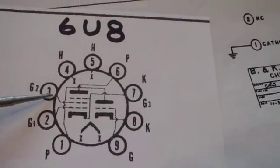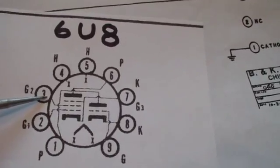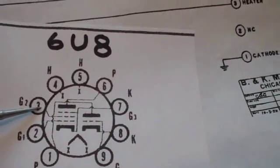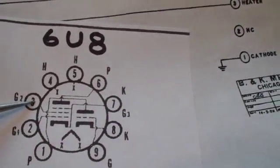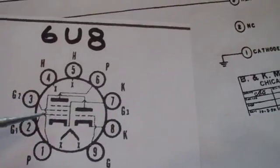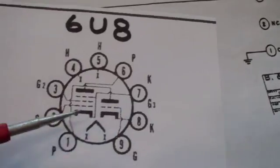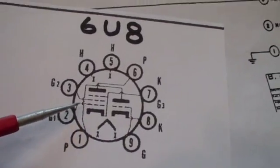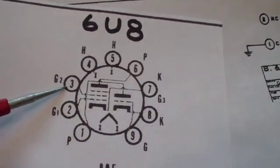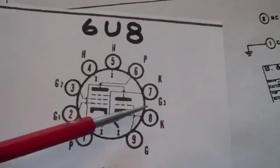grid one, maybe grid two, depending on whether it's connected, whether that's actually a pentode or not, and maybe grid three, which is pin seven over here. So cathode, at least one grid, probably a second grid if it's a pentode, and a plate.